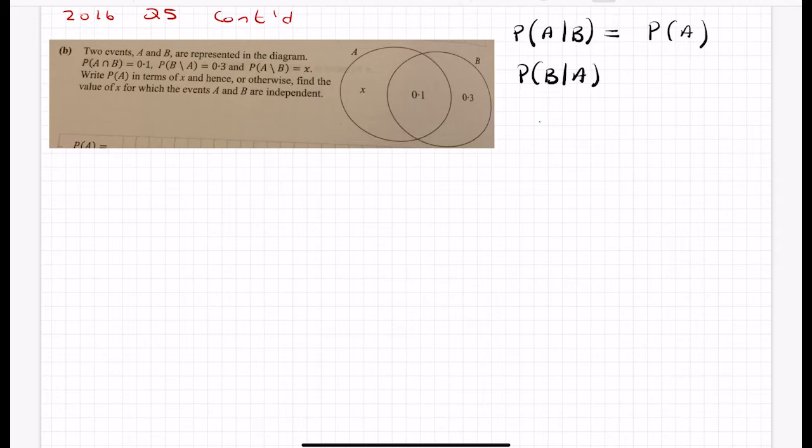Of course, you can write it backwards: the probability that B occurs given A has occurred is the same as probability of B. And then the third rule: the probability of A intersection B is the same as the probability of A by the probability of B.